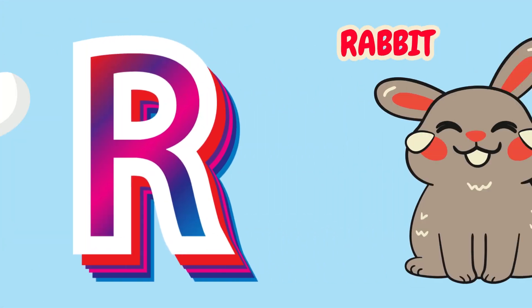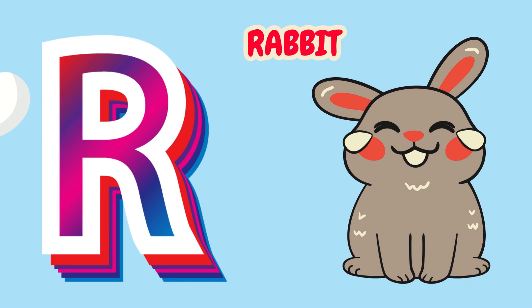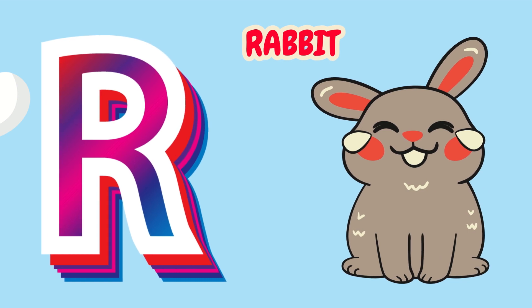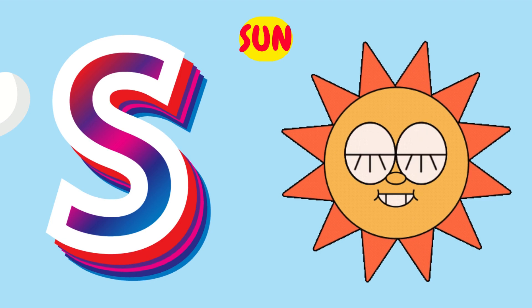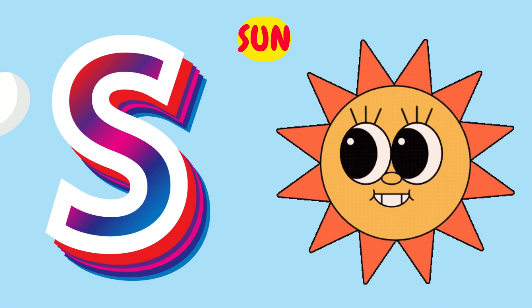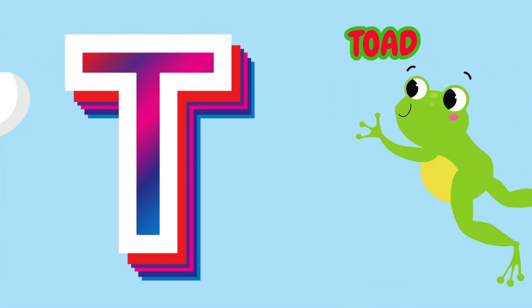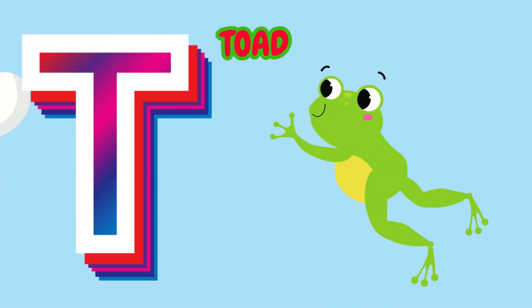Q is for Queen. Q-Q-Queen. R is for Rabbit. R-R-Rabbit. S is for Sun. S-S-Sun. T is for Toad. T-T-Toad.